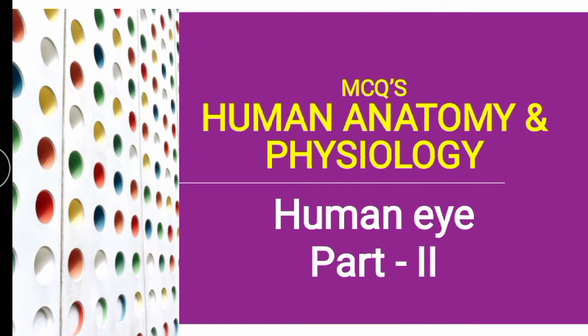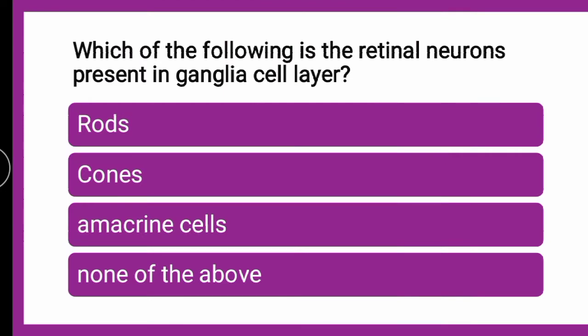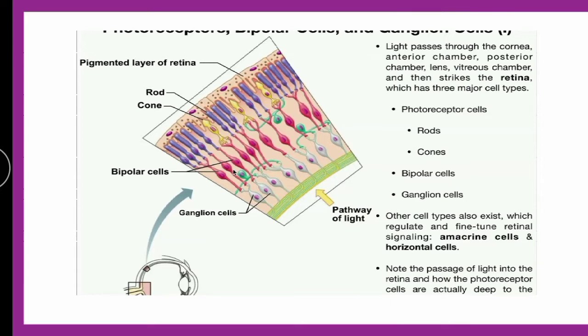First question: which of the following is the retinal neuron present in the ganglion cell layer — whether it is rod, cone, amacrine cell, or none of the above? You are supposed to put your answers in the comment box and then verify your answer. So come on, put your answers first in the comment box.